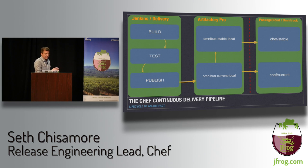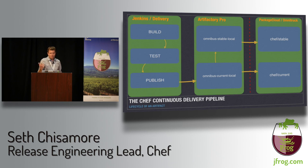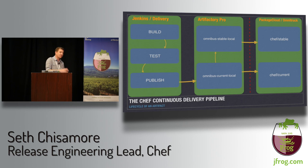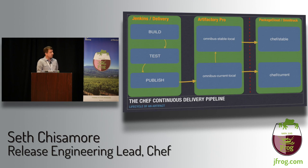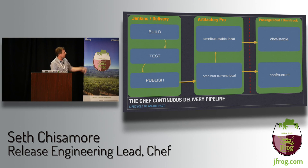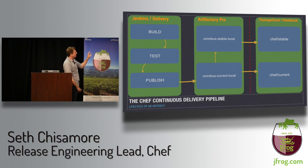A build could be promoted from the current channel up to the stable channel — the Omnibus stable local repo. The question is: when is a build ready for promotion? That varies by project, but at a high level there's a predefined set of user acceptance testing. This UAT might be automated or still manual, and it's up to each product team. The external systems each have a channel that mirrors the associated repo in Artifactory, so anything hitting Omnibus current local goes out to the Chef current channel in the external system.